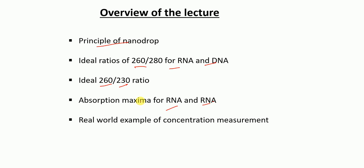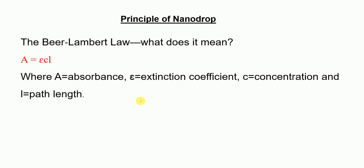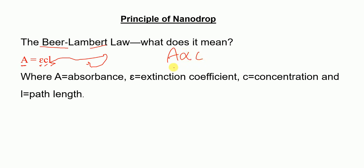First, let's talk about what is the principle of nanodrop instrumentation. The principle is based on the Beer-Lambert law, which states that absorbance equals epsilon times concentration times path length. This means that absorbance is directly proportional to the concentration — the higher the absorbance, the higher will be the concentration.